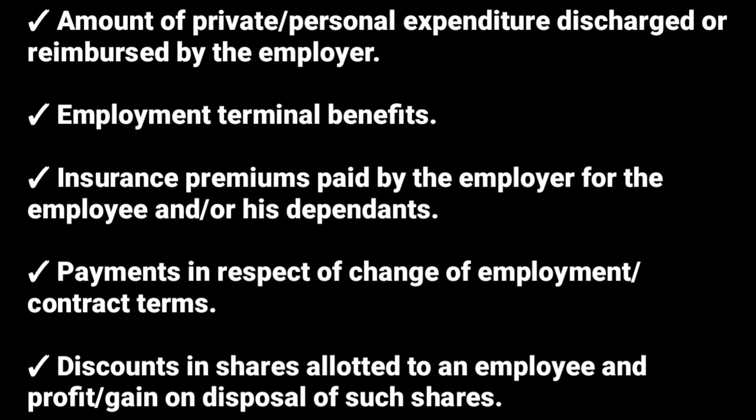Another composition of employment income is any amount of private or personal expenditure discharged or reimbursed by the employer. If the employer pays your personal expenditure — for example, if the employer pays your electricity — it is regarded as employment income. If they pay your housemate, it is regarded as employment income because it is supposed to be personal expenditure but they do it for you.